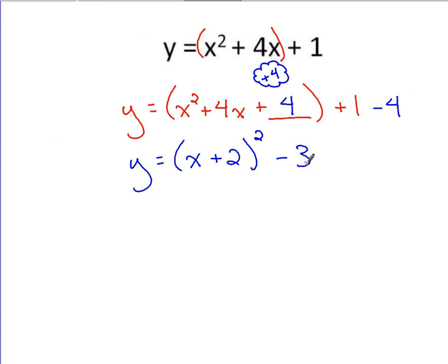There's the vertex form, meaning the vertex will be opposite of positive 2, negative 2 for the x-coordinate. And then same as what we have out here, negative 3 for the y-coordinate.